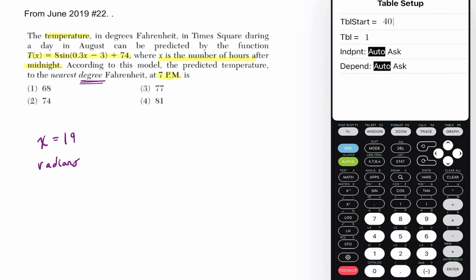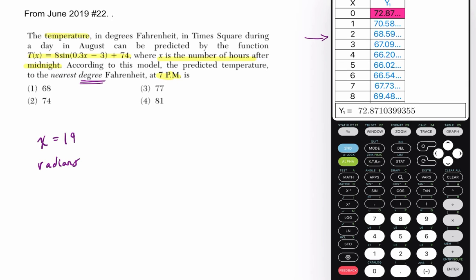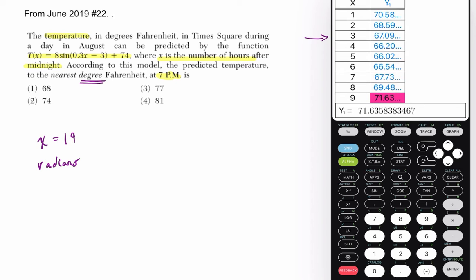I actually suggest avoiding the graph and going to second window, which is your table. So, in our case, I want my table to start at midnight, which is 0, and go up by 1's. Your table set up might say delta table or triangle with a little table, which means a change in the increments. But the nice thing is, if you go to second graph, you'll see your table, and you'll see the hours throughout the day, and that makes this problem a little bit more manageable.